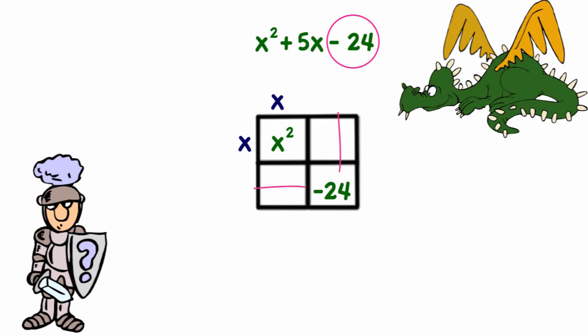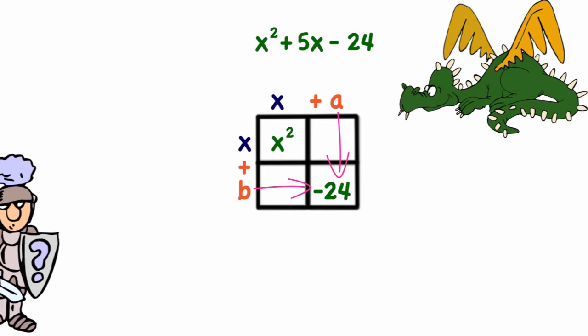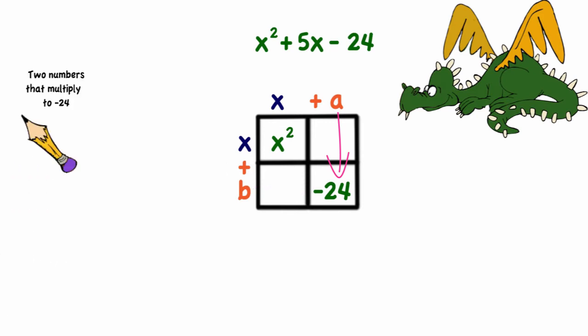That was gotten by multiplying two numbers together. We'll call those a and b. Well, assuming I didn't know what a and b were, I would need to list all the possible combinations that when I multiply them together I get negative 24.